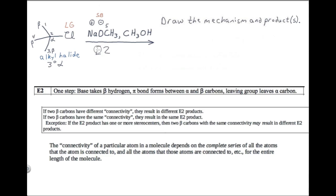Since we only have to draw the mechanism once, which beta carbon should we use? It doesn't matter — we can use whichever of the three beta carbons we like, since they all give the same E2 product. Let's say we'll use carbon 1. Since I'm planning to use carbon 1 as the beta carbon for the E2 mechanism, I will erase the beta labels for carbon 4 and carbon 3. We will use carbon 1 as our beta carbon.